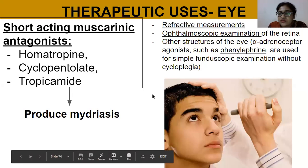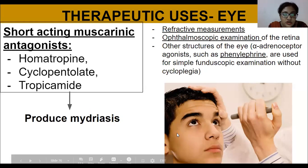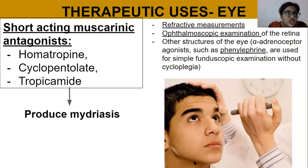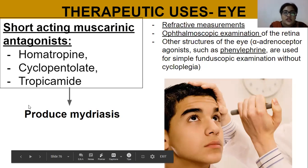First we are going to talk about the eye, because in the previous slide I mentioned ophthalmology twice. Short-acting muscarinic antagonists — homatropine, cyclopentolate, and tropicamide — produce mydriasis. If you take a little child to a doctor's clinic for an eye check, they will first put some drops in the eye of the baby and then check the eye.